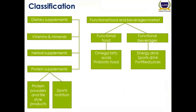Nutraceuticals are divided into two types: dietary supplements and functional foods and beverages. Dietary supplements are further divided into vitamins and minerals, herbal supplements, and protein supplements. Functional foods include omega fatty acids, prebiotics, probiotics, and synbiotic foods. The beverages market includes energy drinks, sports drinks, and fortified juices.